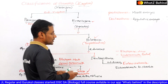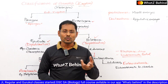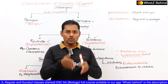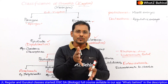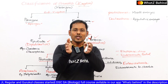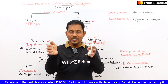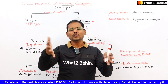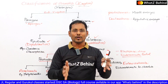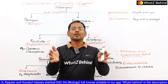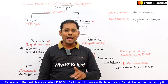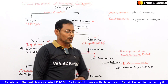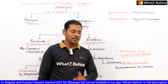Pseudocoelomata have a blastocoel as their coelom, which is not lined by mesodermal epithelium. A primary coelom is formed but it is not lined by mesoderm. The next subdivision is Schizocoelomata, which has a true coelom. In Schizocoelomata the coelom is formed by the splitting of the mesoderm. This true coelom — the schizocoel — is lined by mesodermal epithelium. Examples include Annelida, Arthropoda, and Mollusca.